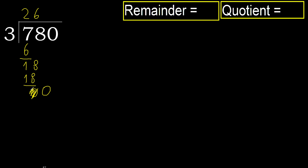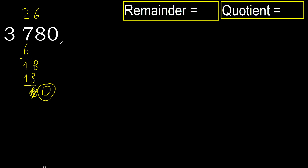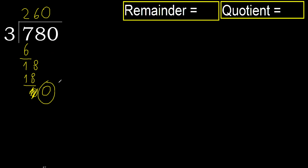Next. Bring down 0, eliminate 0 on this side. 0 is less, therefore next — there is no number, therefore finish it. Complete, always complete with 0. Complete because here we finish it with this number.